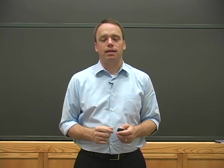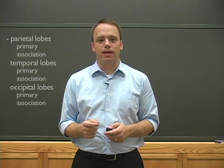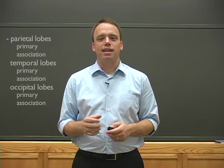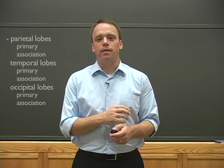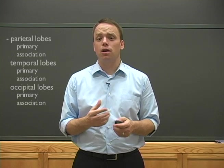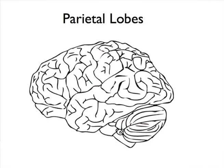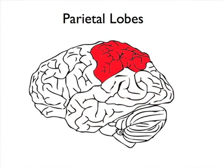Let's begin by discussing the parietal lobes. The parietal lobes play an important role in processing somatic information — that is, taking signals from your skin, the parietal lobe creates the sensations of things like touch, pressure, pain, and temperature. In addition, the parietal lobes are a key area for multi-sensory integration and play an essential role in things like spatial navigation.